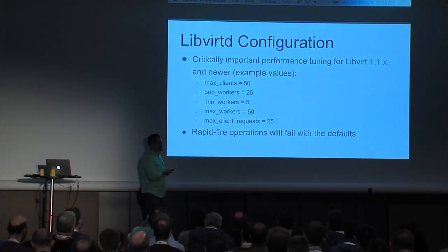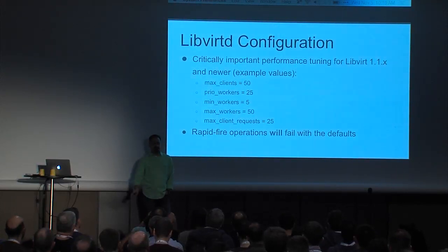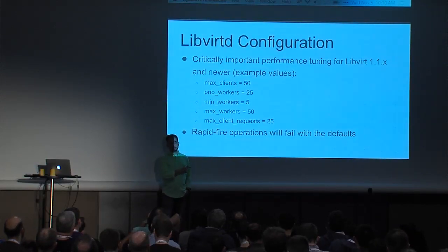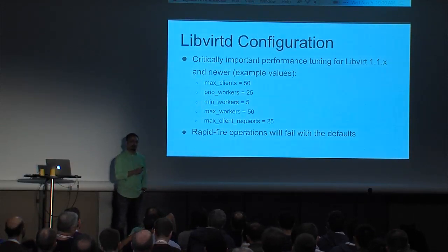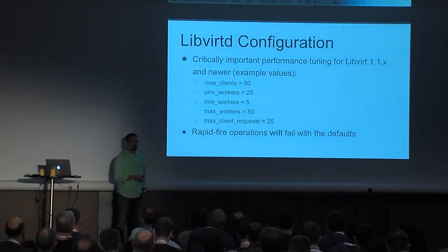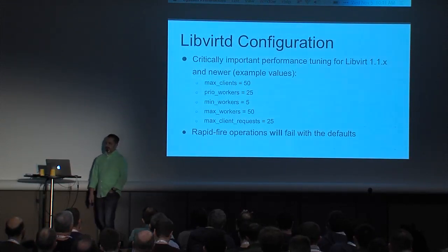Some important LibVirt configuration we discovered regarding concurrency: we were having LibVirt operations fail when doing things like a massive evacuation with a single target, and it turned out to be a concurrency issue. These are the values we're using today successfully. To increase the level of concurrency of LibVirt to be able to deal with hypervisors running up to 50 or 60 instances that have to be mass evacuated, this will allow you to get the level of concurrency you need.